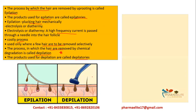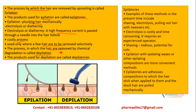Examples of epilatories include shaving, electrolysis, and pulling out hair with tweezers. Electrolysis is costly and time-consuming and requires a skilled, experienced operator. Shaving can be tedious and leads to potential cuts on the skin. Epilation with epilating wax or adhesive compositions — to which hair sticks when applied — is also done, and the stuck hair is then pulled out mechanically.